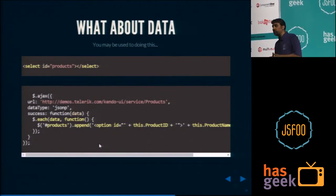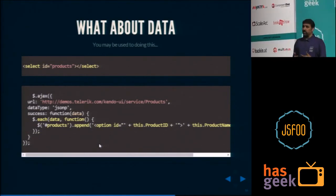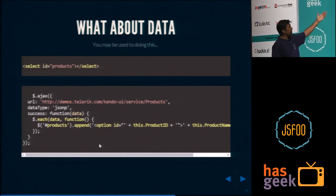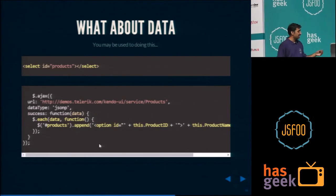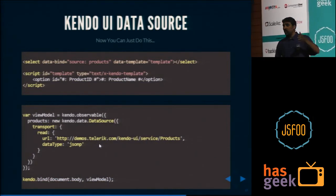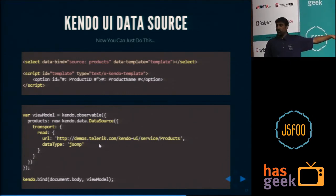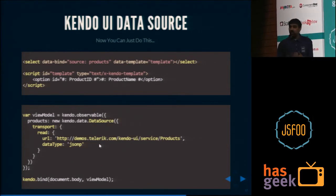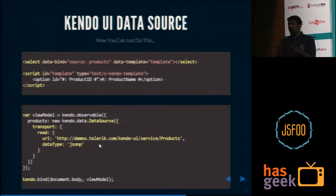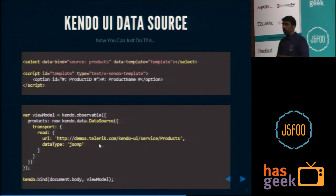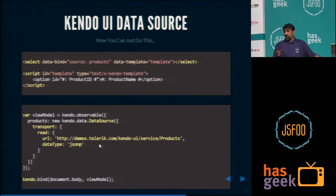So the next question may be: this is fine, but what about data? How do you connect a web service and bind it to a widget? This is what you're used to doing: $.ajax, select ID products, then append options once success happens. Well, with Kendo UI data source, this is how simple it gets. I have data-bind source equals products on the select. Products is a property in the view model, and it's a Kendo UI data source. The syntax is very minimal — a transport object with a read URL, and I specify JSONP because you may be going cross-domain. If within the same domain you don't need JSONP. Then kendo.bind document.body with the view model — that's it.